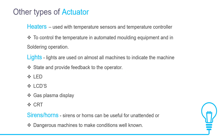Other types of actuators include: electroactive polymers; heaters, used with temperature sensors and temperature controllers to control temperature in automated molding equipment and soldering operations; lights, used on almost all machines to indicate machine state and provide feedback to the operator — including LED, LCD, gas plasma display, and CRT; and sirens or horns, which can be useful for unattended or dangerous machines to make conditions well known.